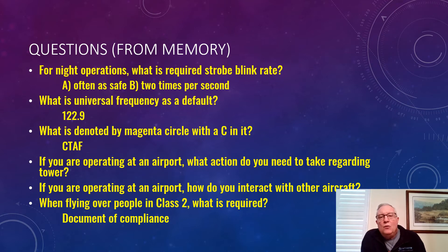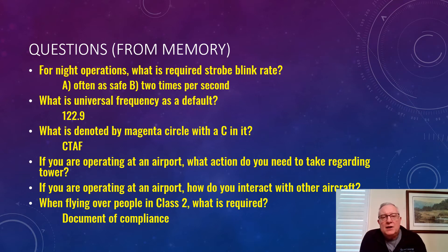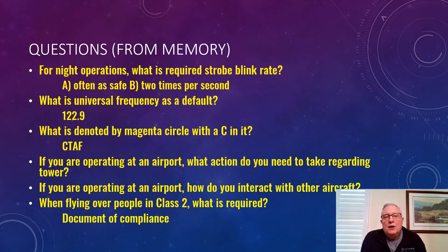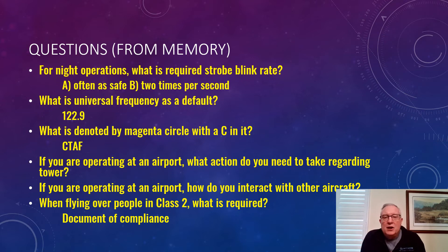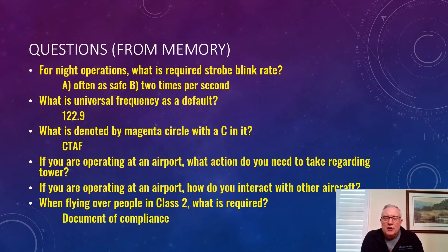For night operations, what is the required strobe blink rate? Both 'as often as safe' and 'two times per second' seemed like they could be correct — I guessed correctly that it's 'as often as safe.' What is the universal frequency as a default? Just knowing that from memory got me a point. What is denoted by the magenta circle with a C in it? Anyone who studied for five minutes should know that's CTAF. If you're operating near an airport, what action do you need to take regarding the tower? That one gave me some pause — there were a couple of correct-seeming answers but one is more correct.